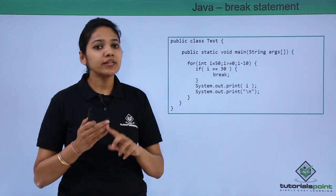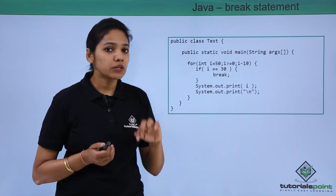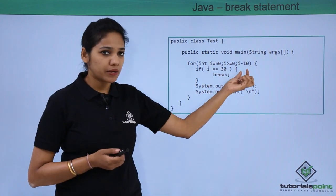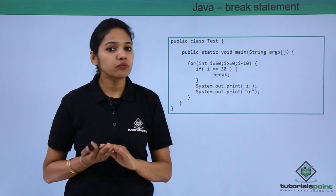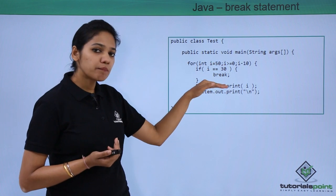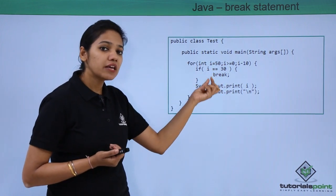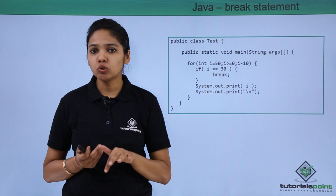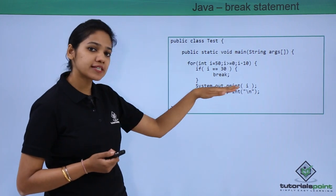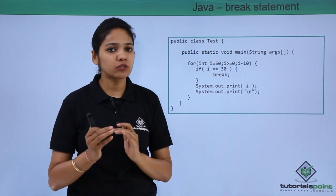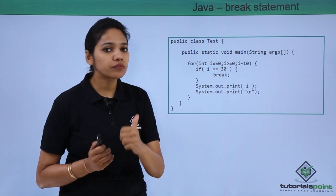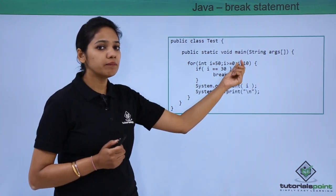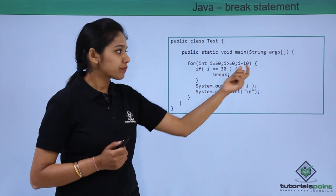In this case, where the i value is 50, it will print the value 50, then go back to the update statement. Now the i value will be 40. It will come back and check the condition — is 40 equal to 30? That is no. Therefore, the rest of the statements will again be executed. The value is printed as 50, then 40. Now the value will be 40 minus 10, that is 30.